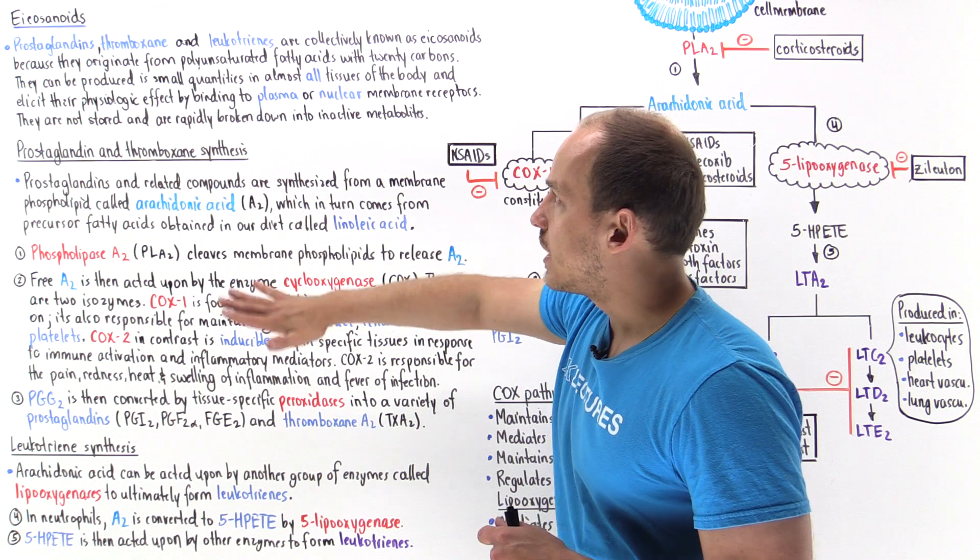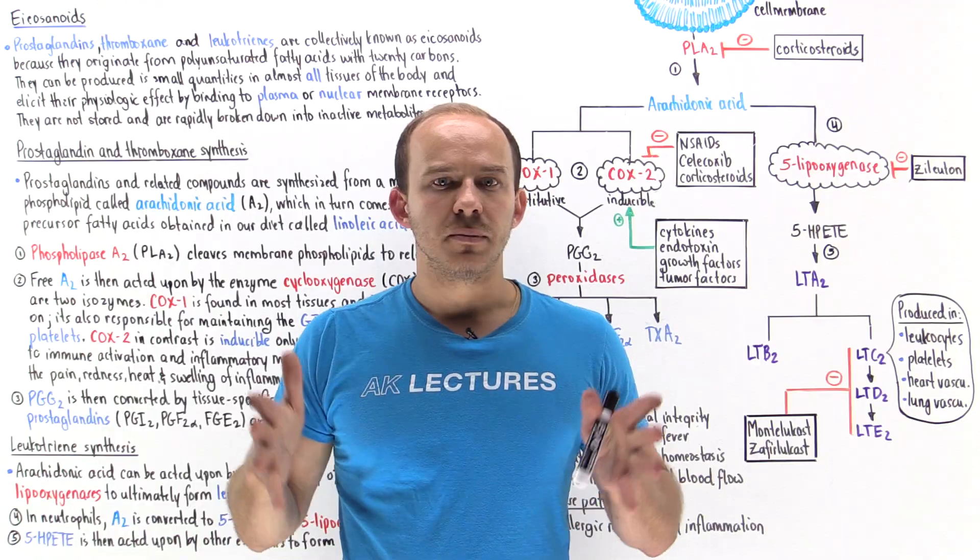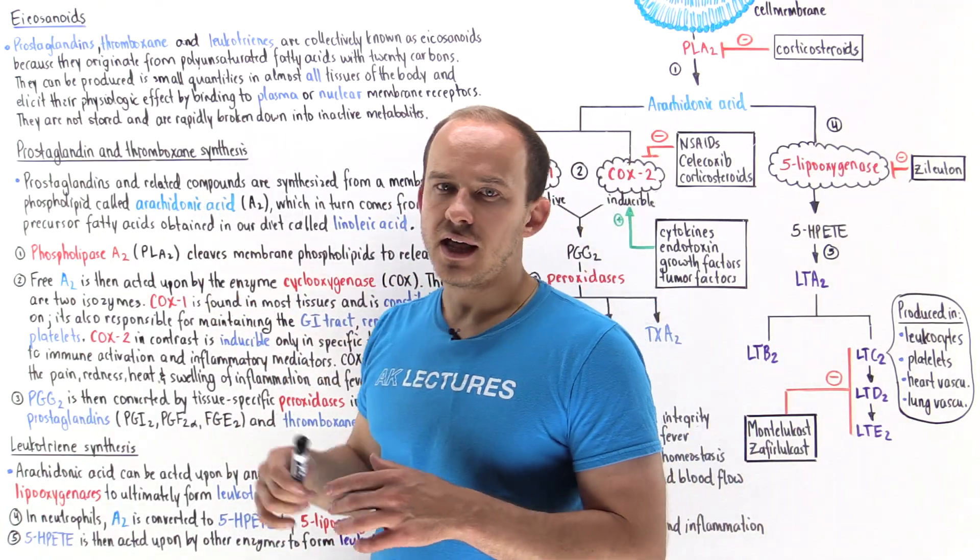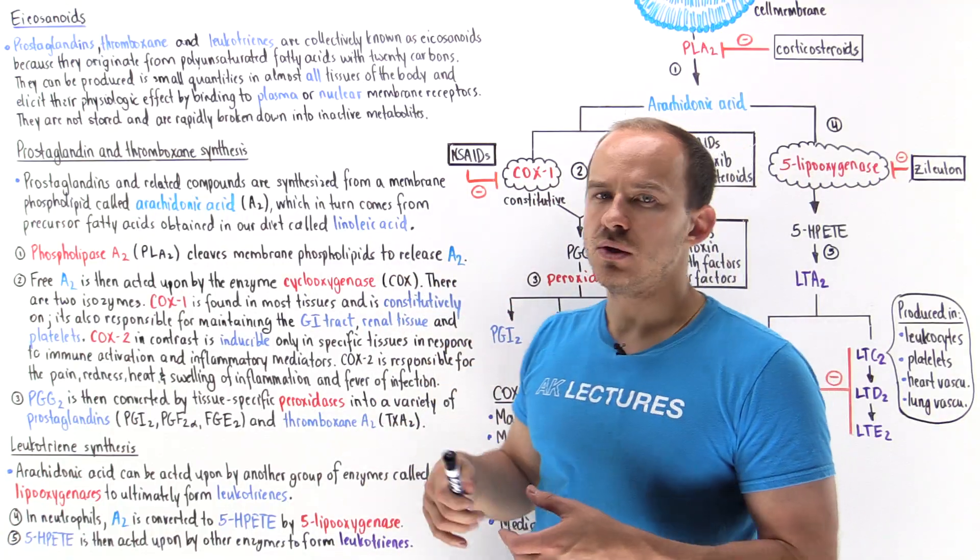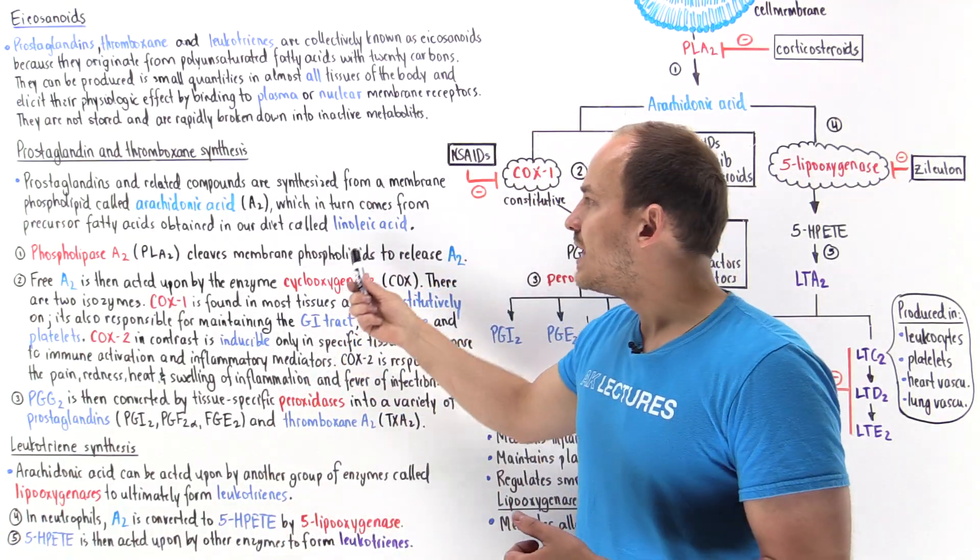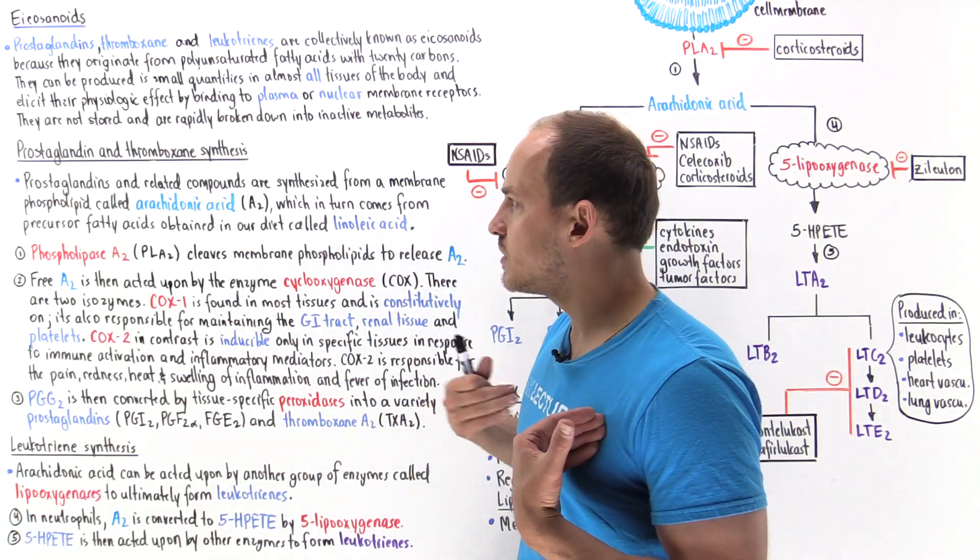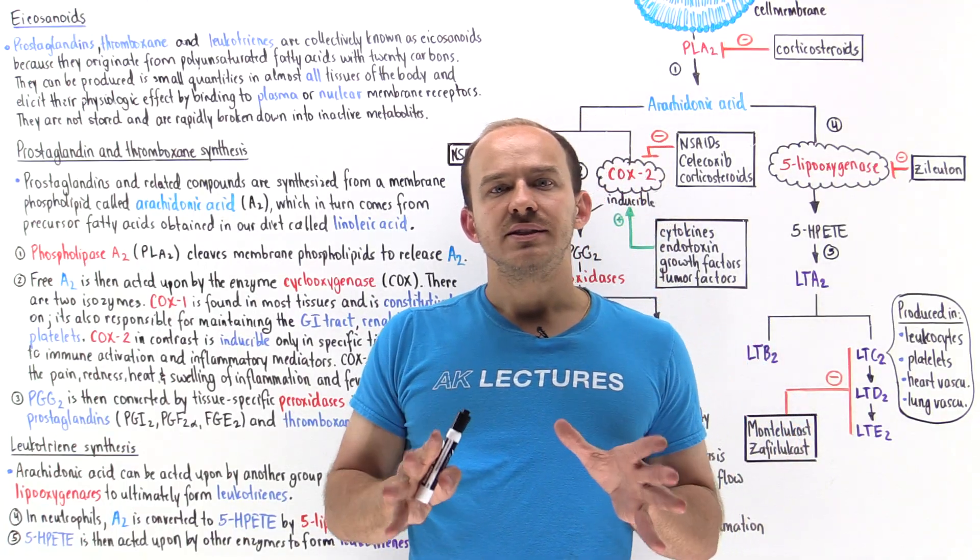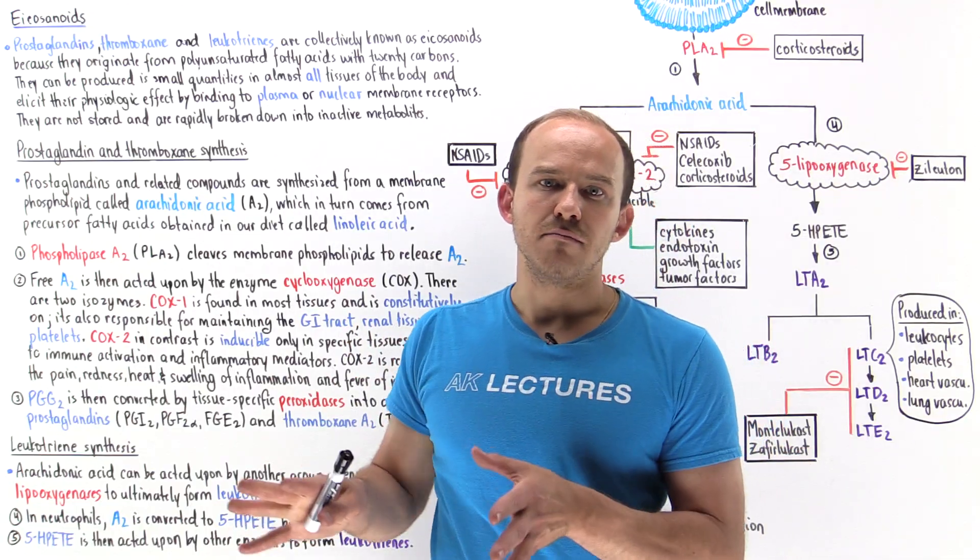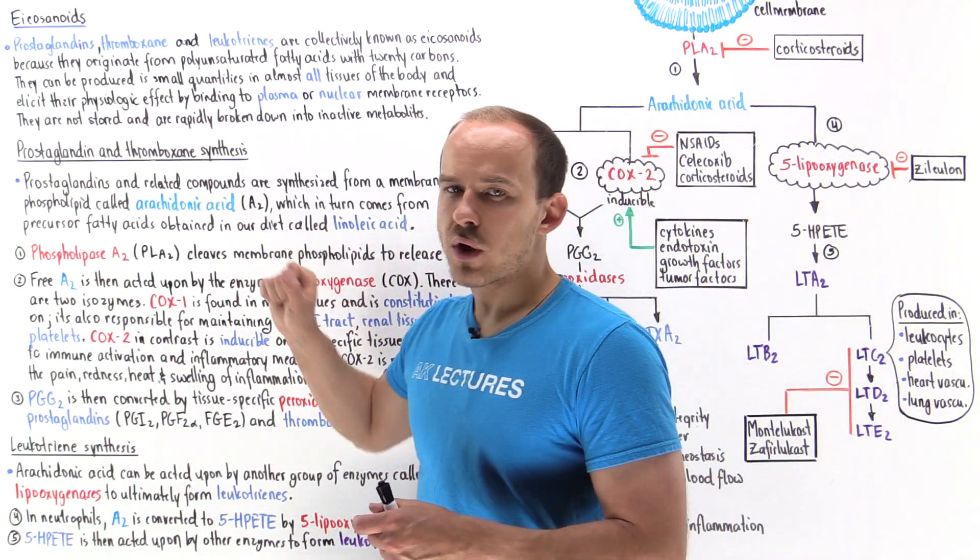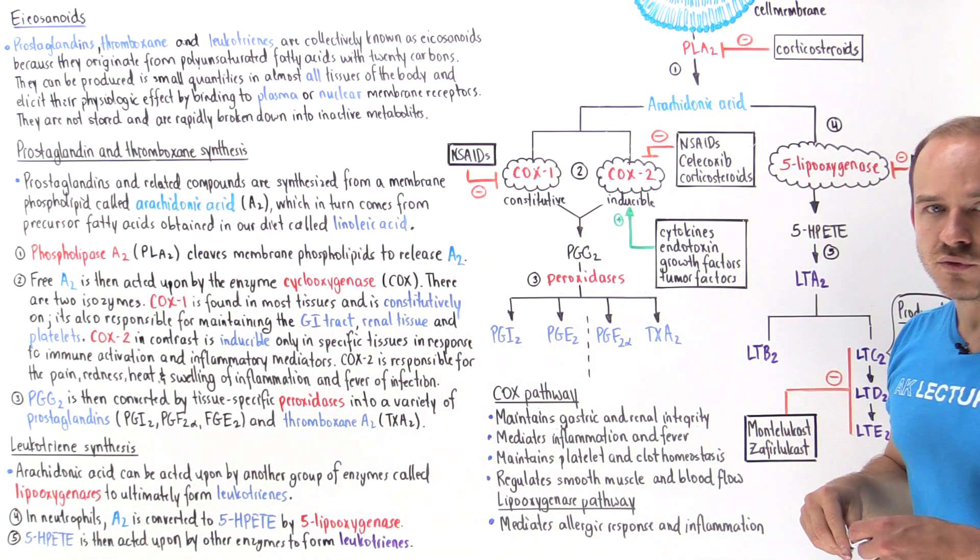Prostaglandins, thromboxane, and leukotrienes are all synthesized from the same 20 carbon fatty acid known as arachidonic acid. We ingest food that contains the precursor molecule known as linoleic acid, a six carbon fatty acid the cells use to ultimately synthesize arachidonic acid. Arachidonic acid is attached onto phospholipids in the cell membrane where it's stored.